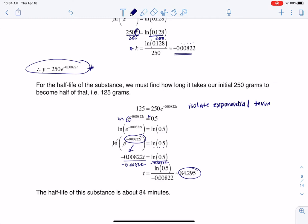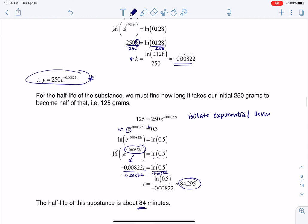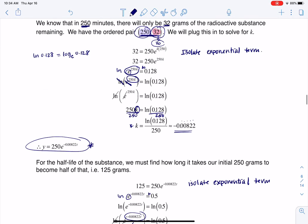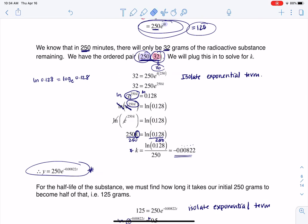And then I get 84.295. Now the direction said, go ahead and round this to the nearest minute. So I said, hey, it takes about 84 minutes. So in about 84 minutes, I'll have only 125 grams, even though I initially started with 250.